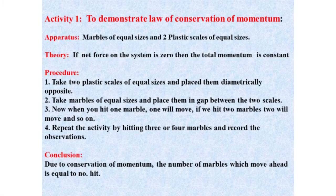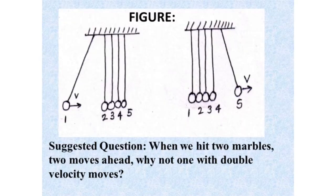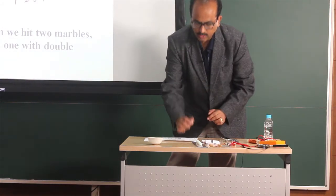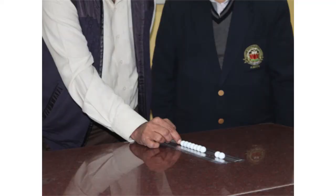In this presentation I will be showing around 10 such experiments. My first experiment is on the law of conservation of momentum. We just need simple material for this: two plastic scales and some marbles. These marbles should be of equal sizes. As you can see, when I hit two marbles, two move. When I hit one, one will move. This can be used to explain the law of conservation of momentum.